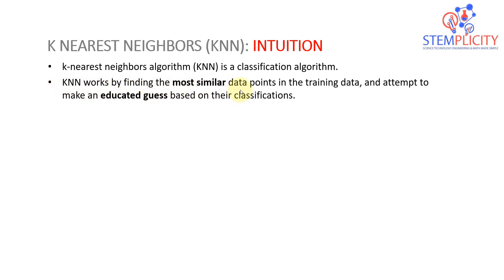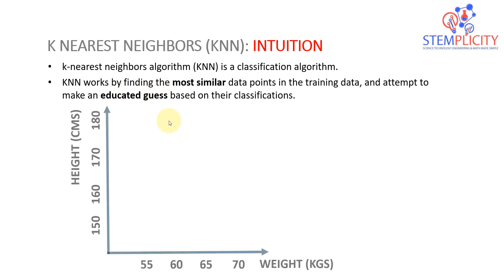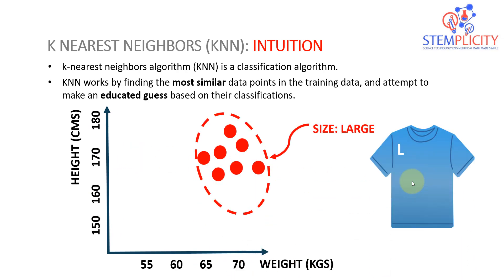KNN works by finding the most similar data points in the training data and makes an educated guess based on their classification. Let's take a look at an example. Assume we have weight on the x-axis and height in centimeters on the y-axis. Let's say we have a clothing store and we want to guess the t-shirt size for any customer, categorized as either large (L) or small (S).